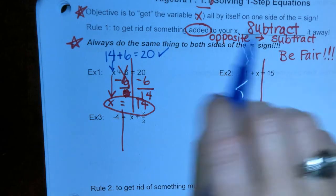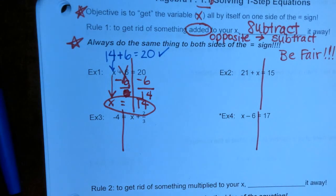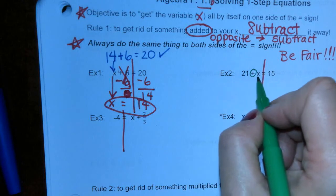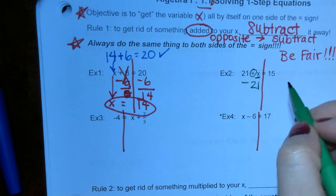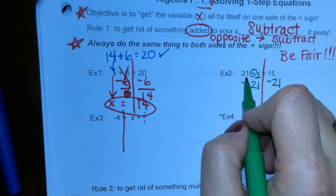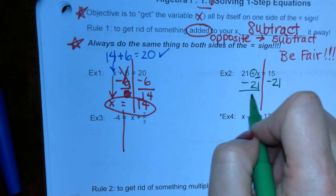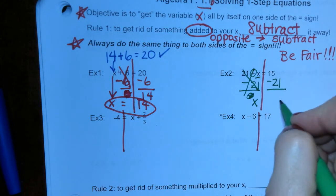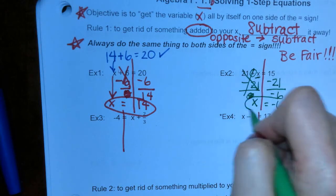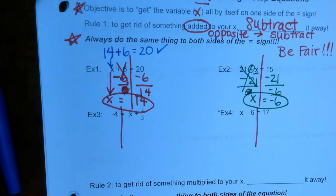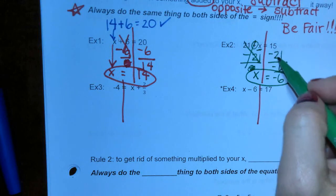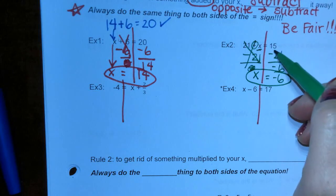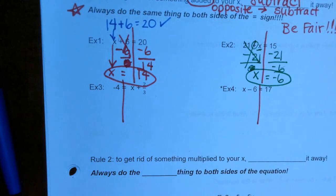Example number two: something is being added to the x. How do we get this 21 off the x? Something is being added, so we're going to subtract 21 from both sides. 21 minus 21 gives us 0 — it cancels. We're only left with x on this side. 15 minus 21 gives you negative 6. If you need help with positive and negative numbers, stop the video and figure out how we got negative 6.